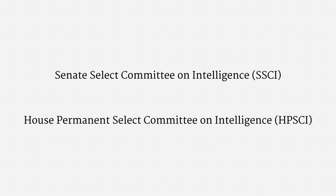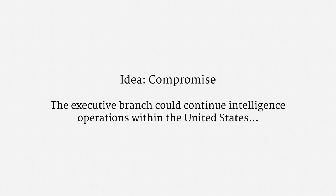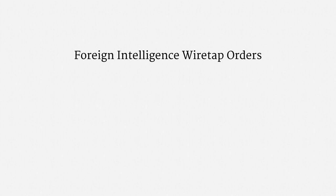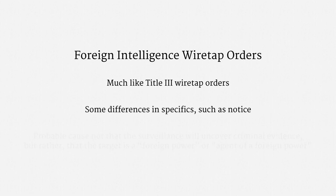Congress's legislative response was the Foreign Intelligence Surveillance Act of 1978, just called FISA for short. The basic idea was to strike a compromise balancing national security and civil liberties. The executive branch would be allowed to continue intelligence operations within the United States, but under court supervision. The government was going to need to get foreign intelligence wiretap orders from a court. The orders would look a lot like ordinary Title III wiretap orders, though with some differences — such as notice. Under the Wiretap Act, a target must always receive notice. Under FISA, notice only has to be provided if criminal charges are filed.